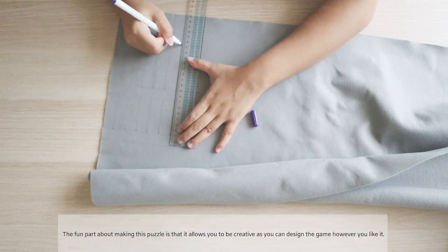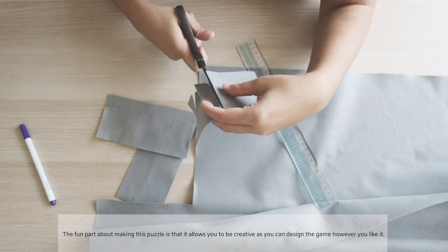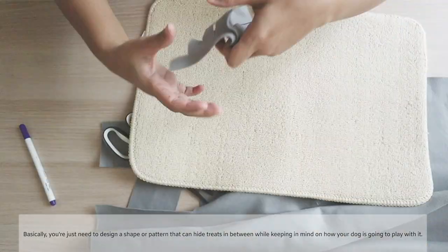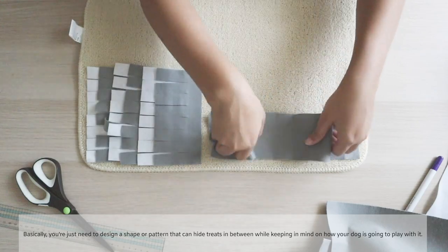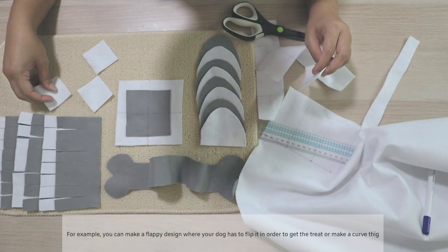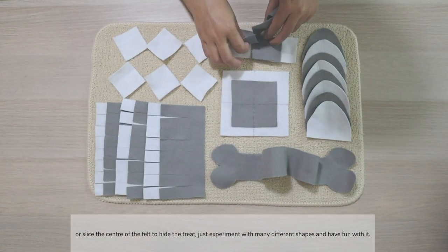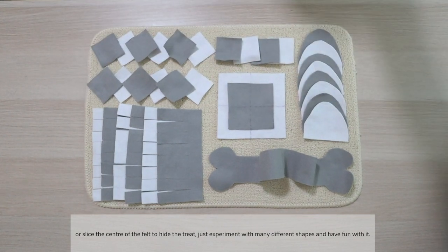The fun part about making this puzzle is that it allows you to be creative as you can design the game however you like it. Basically, you just need to design a shape or pattern that can hide treats in between while keeping in mind how your dog is going to play with it. For example, you can make a flappy design where your dog has to flip it in order to get a treat or make a curved thing or slice the center of the felt and hide the treat. Just experiment with many different shapes and have fun with it.